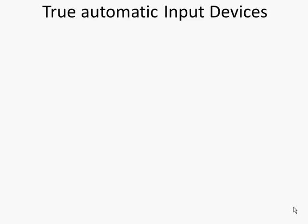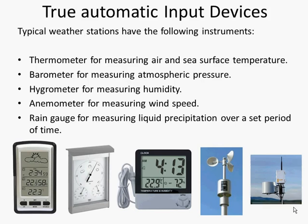Truly automatic input devices might be those that just sit there, automatically read something, and store it into a computer without any human input. We might typically find these sorts of input devices in situations such as weather stations, where various input devices constantly and frequently read weather measurements — whether it be wind speed, air pressure, or other things as well. If you pause the video at this point you can have a quick read about those different devices, as they are good examples of truly automatic input devices.